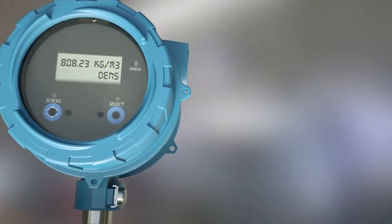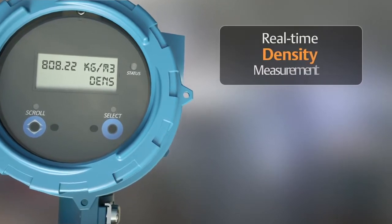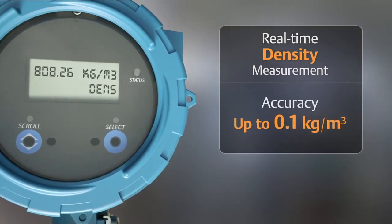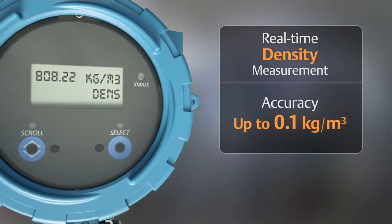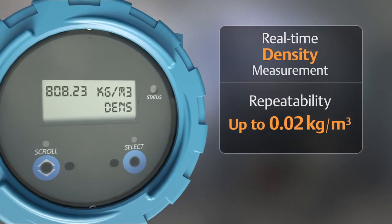Let's look at some of the key features of the Compact Density Meter. The meter provides real-time, inline density measurement with up to 0.1 kg per cubic meter density accuracy and up to 0.02 kg per cubic meter density repeatability.